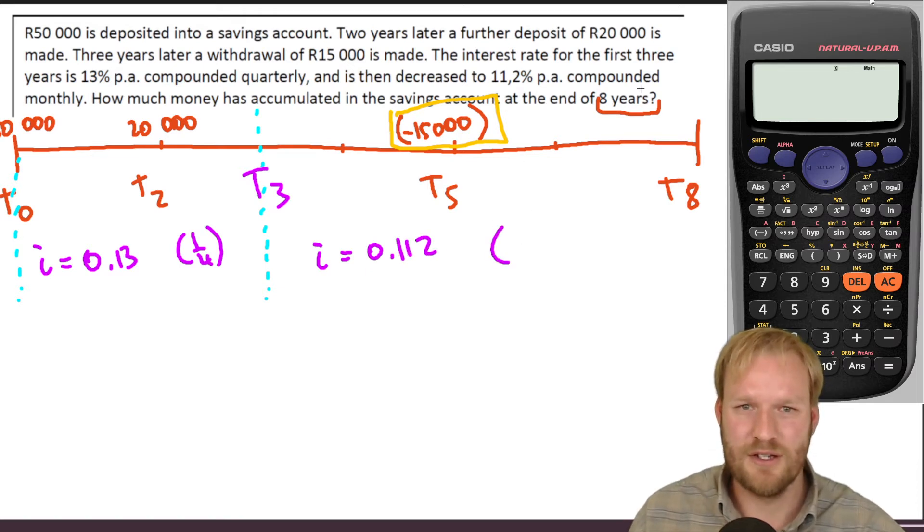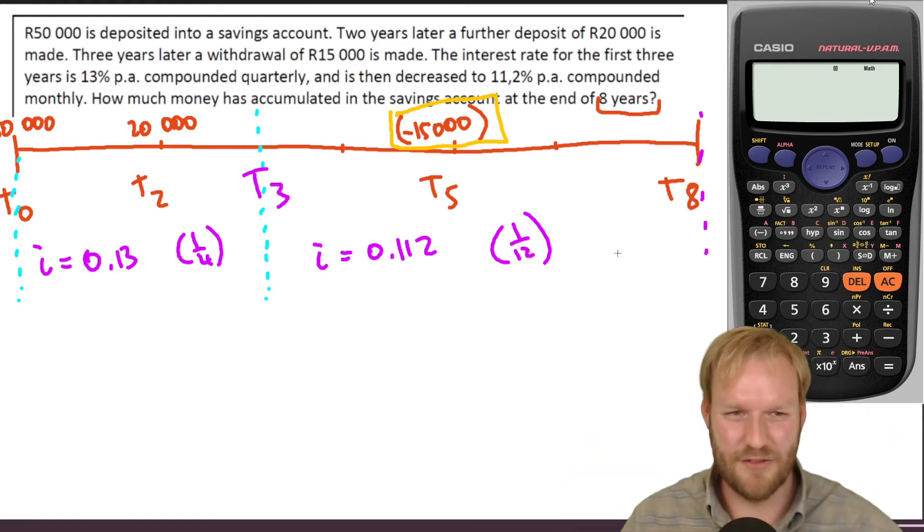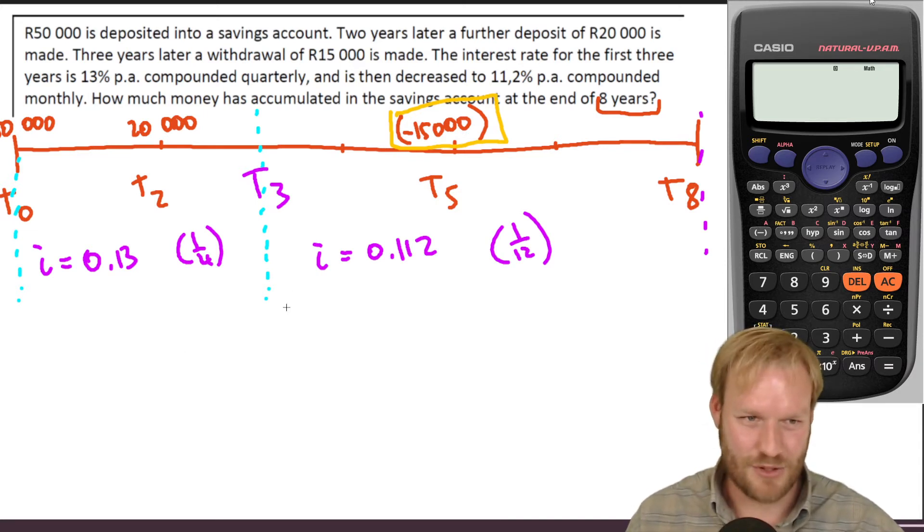And then it is decreased to 11.2%. Maybe that's why they started withdrawing money. So zero comma one one two percent, and that now is compounded monthly. So I'm just going to put a 12. Just feels a bit easier than writing monthly, and you've got that concept of over 12. So now we need to put all of that stuff from the timeline into some sort of grand equation.